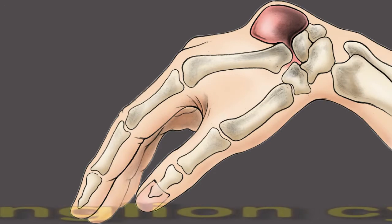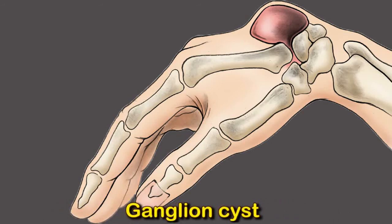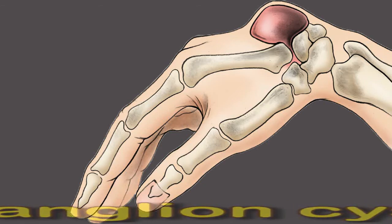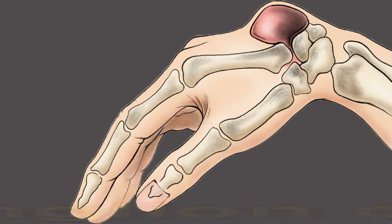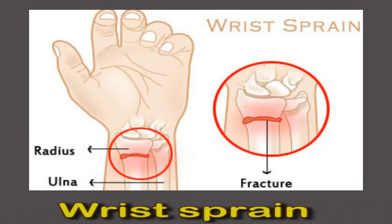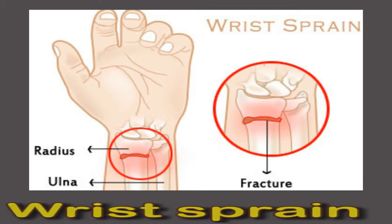Ganglion cysts are fluid-filled soft tissue cysts that often develop on the wrist opposite the palm, but can also occur on the palmar aspect of the wrist. Smaller cysts often tend to hurt more than larger ones. A wrist sprain is usually caused by falling and bending the wrist backward when the hand hits the ground, over-stretching the ligament.